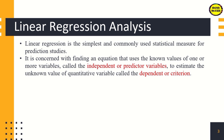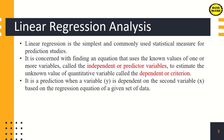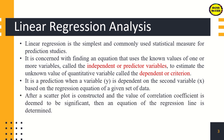unknown value of a quantitative variable called the dependent or criterion variable. It is prediction when a variable y is dependent on the second variable x, based on the regression equation of a given set of data. After a scatterplot is constructed and the value of the correlation coefficient is deemed significant, then an equation of the regression line is determined.